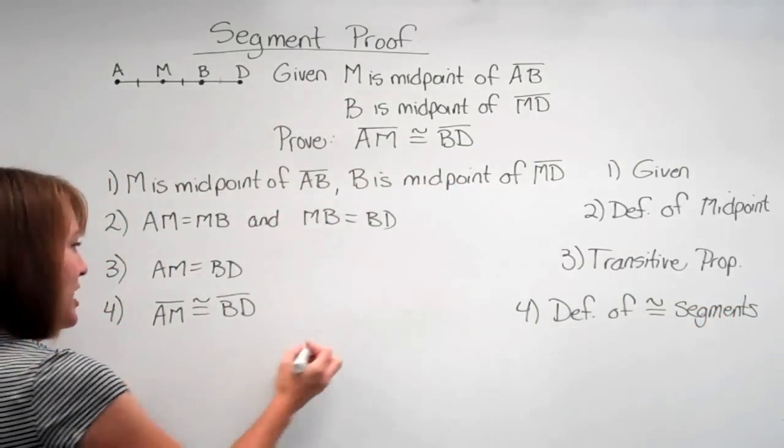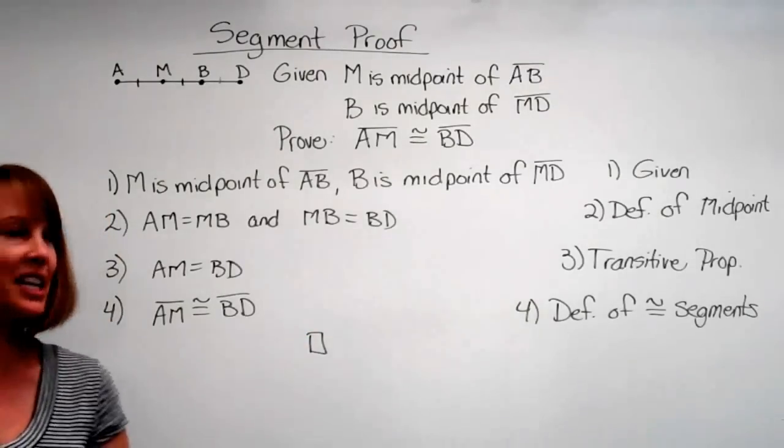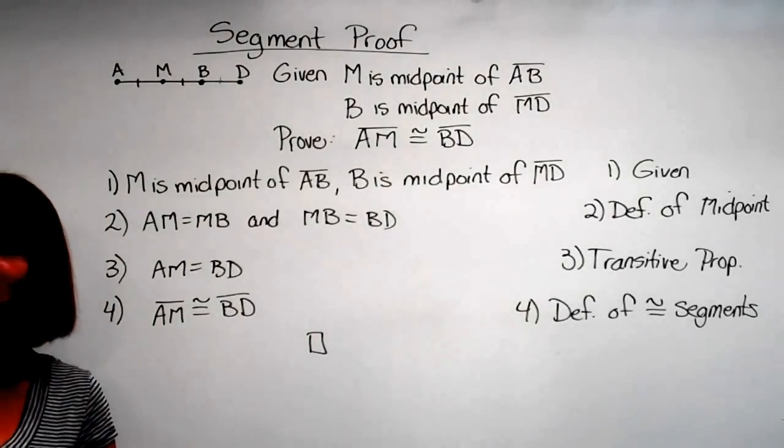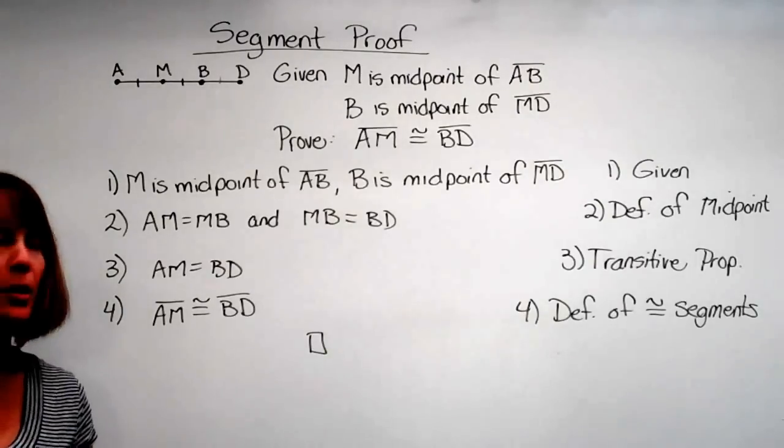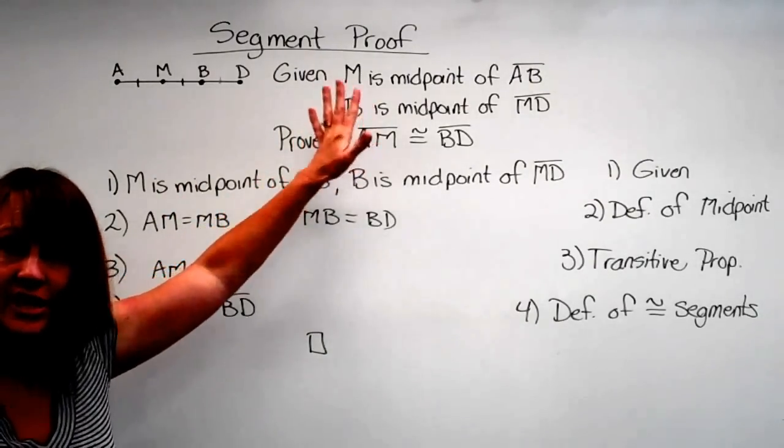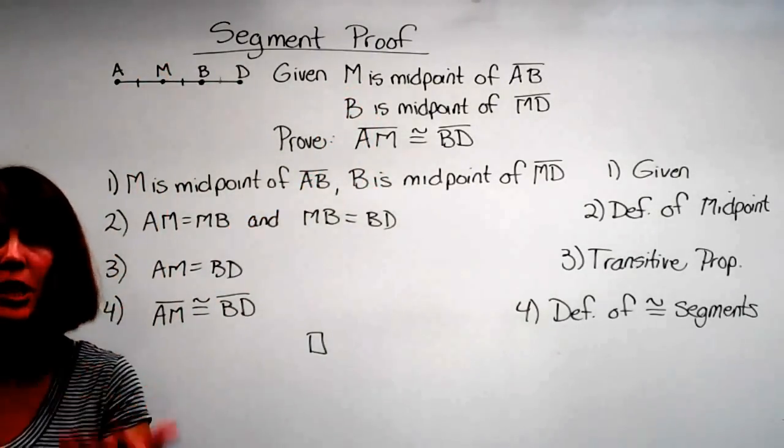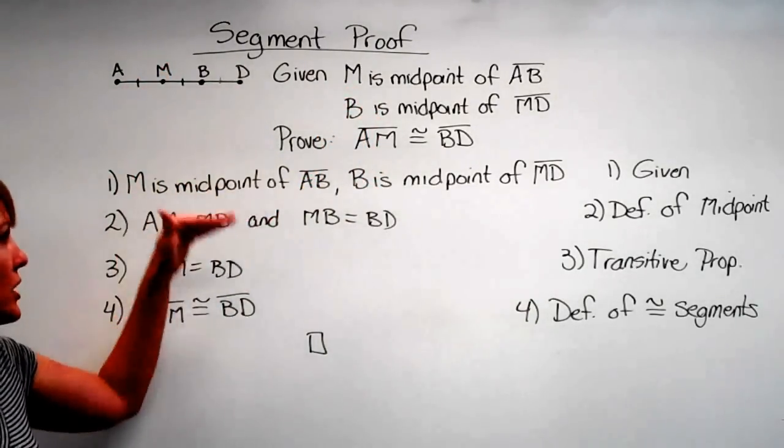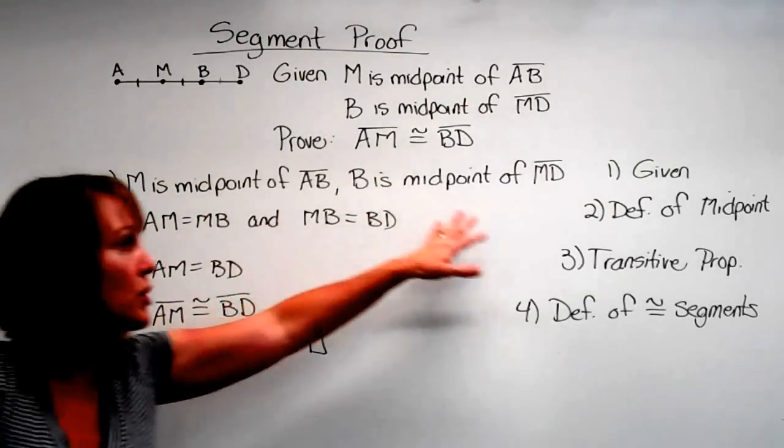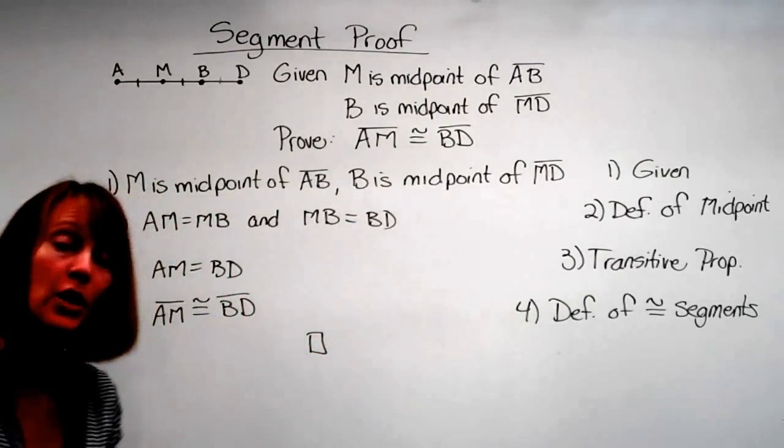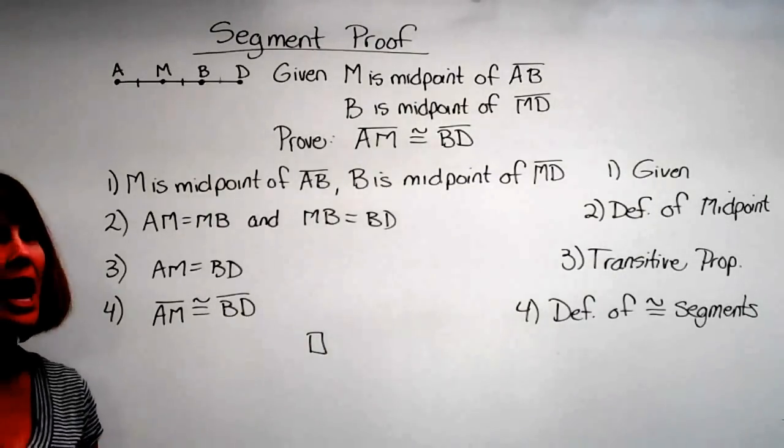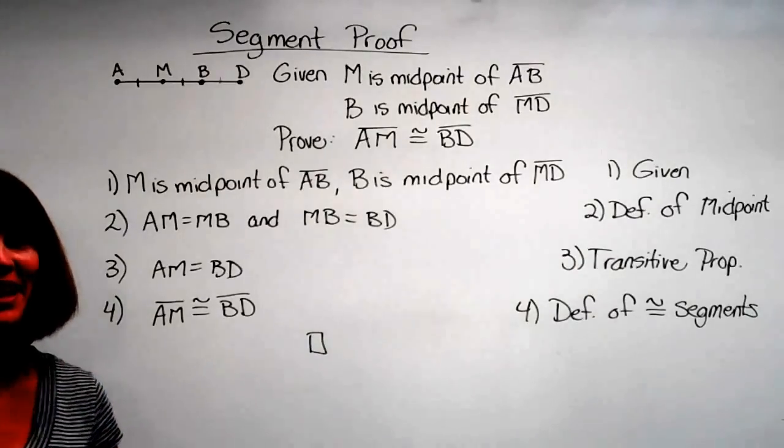And now I have proved what they've asked me to. So I put my finality box, and voila, I've done my first segment proof. Now remember, use the definitions they've given you. Mark up your diagram so you can see what you know. Follow along. You will find that each step leads you to a new definition, a new property, or a new postulate until you get to what you need to at the end. And remember, you know you love math.